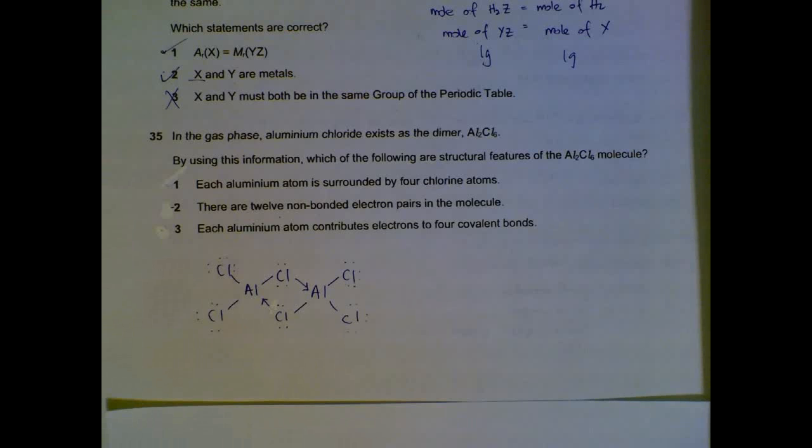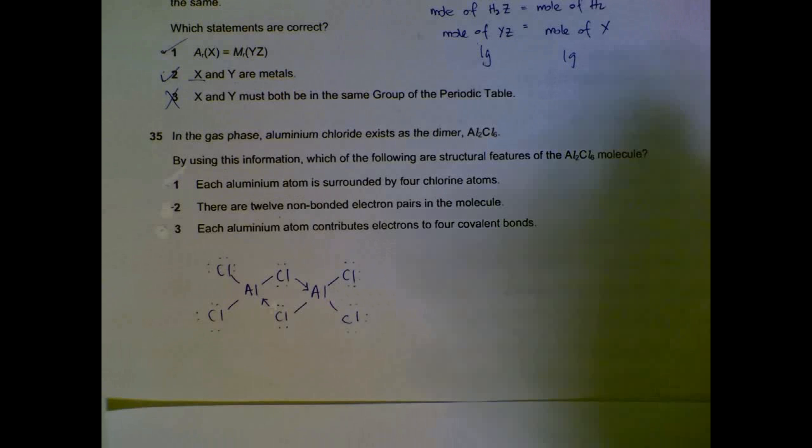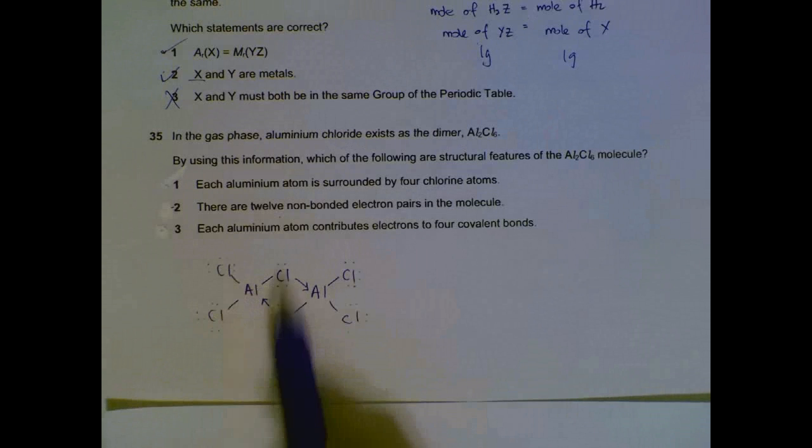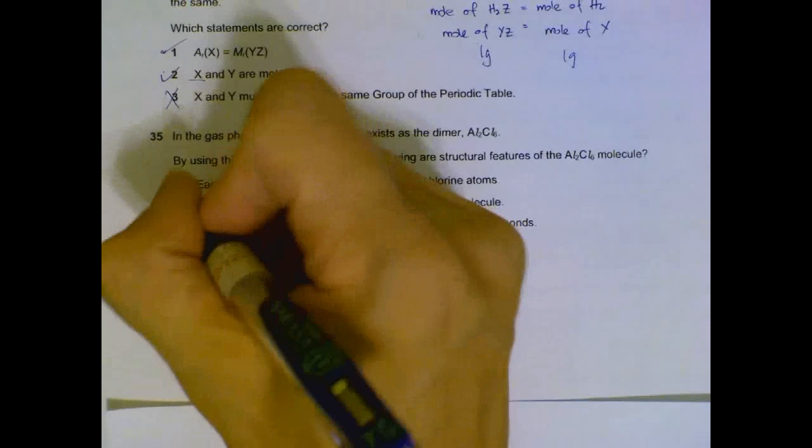Number 35, dimer aluminum chloride. So I draw the structure here and then we see the information. Each aluminum is surrounded by four chlorine atoms. That statement is true - four chlorine atoms over each aluminum.